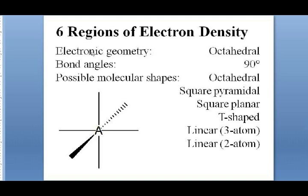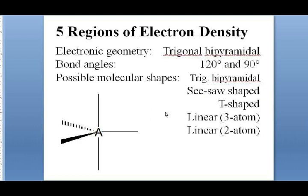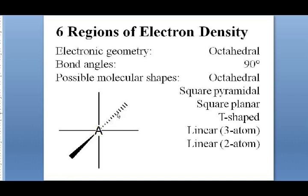Six regions of electron density form an octahedron, with bond angles of 90 or 180 degrees. Those are the family of molecular shapes possible for six regions of electron density. In all these three-dimensional shapes — tetrahedral, trigonal bipyramidal, octahedral — once you get accustomed to seeing wedges and dashes the way chemists intend, they become much easier to read. Practicing with physical models is one of the main reasons we're doing modeling in lab. Practice will definitely help.